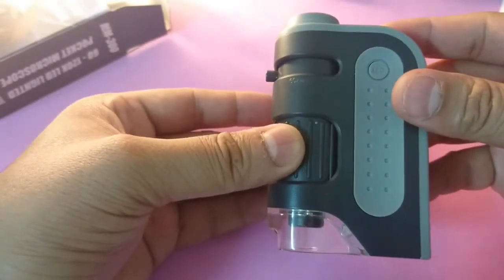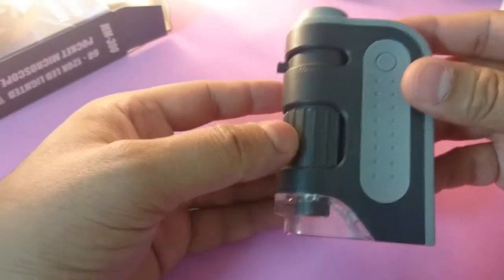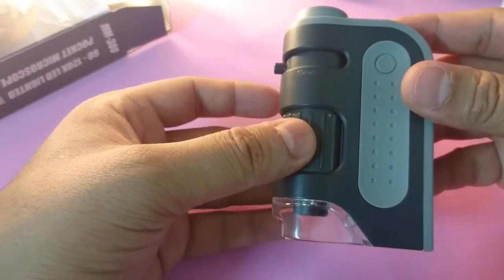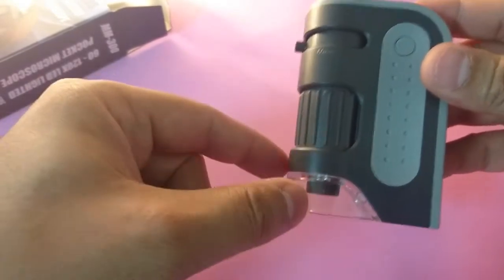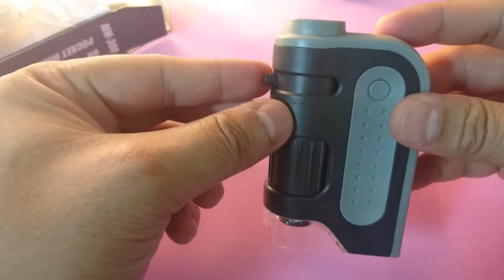And you can see here this is the focusing of the eyepiece - sorry the focusing of the objective lens you can see here down and this one is for the eyepiece.